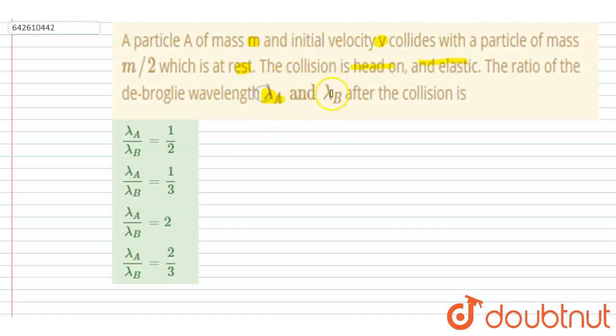of de-Broglie wavelength λA and λB is to be calculated here. So if I talk about λA by λB, that is de-Broglie wavelength. So de-Broglie wavelength if I talk about A, it will be Planck constant by mass of A by vA and same will be for B.